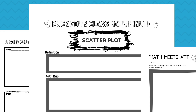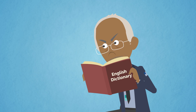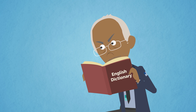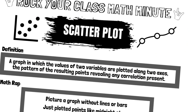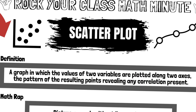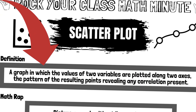Scatterplot. What does the dictionary say? A graph in which the values of two variables are plotted along two axes, the pattern of the resulting points revealing any correlation present.